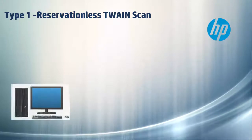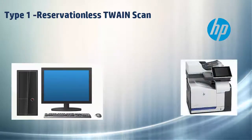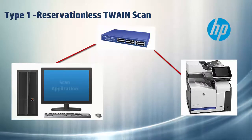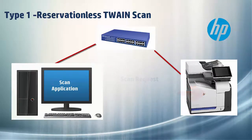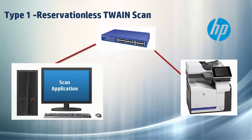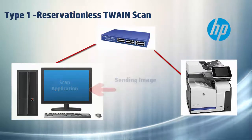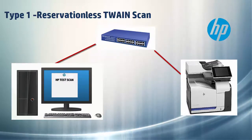There are two types of Twain scanning. Type 1 is the reservation-less scanning. In this process you load the original into the document feeder or place it on a scanner bed of the MFP and initiate the scan process from a Twain scan application. The original is scanned and a preview is sent to the PC Twain scan application. The image can then be edited and saved onto your PC. This is helpful particularly in a small business environment.